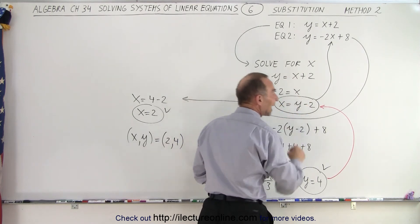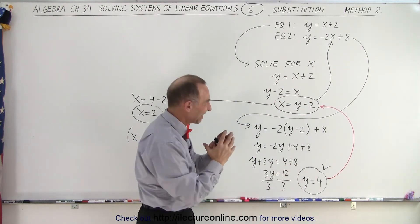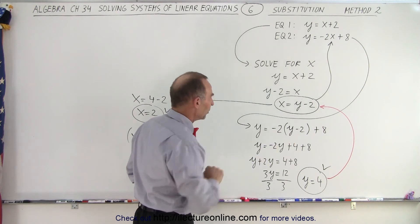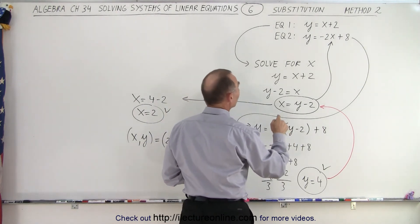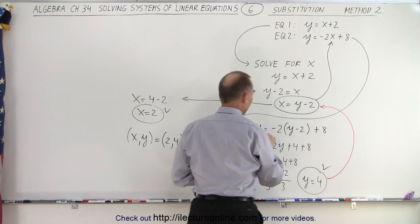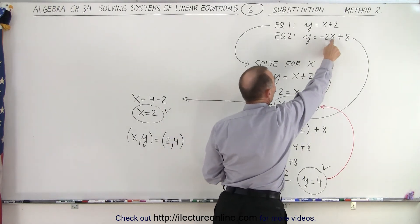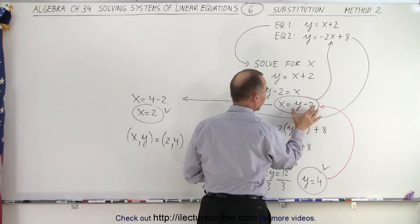And so we can isolate x. That's what we mean by solving for - isolating x in terms of the other variable. Then, we take our second equation and instead of plugging in x, we plug in what x is equal to in terms of y.